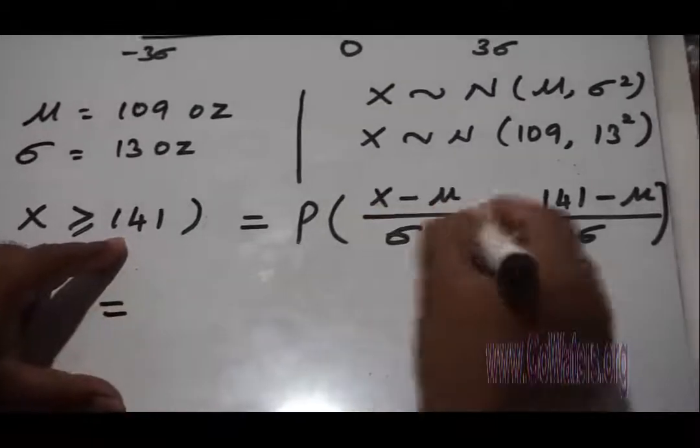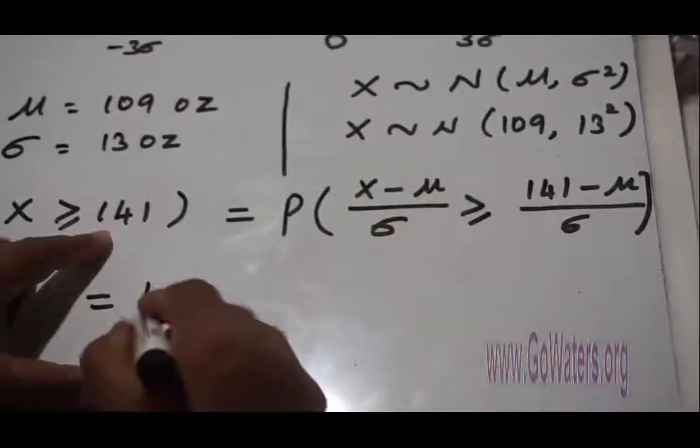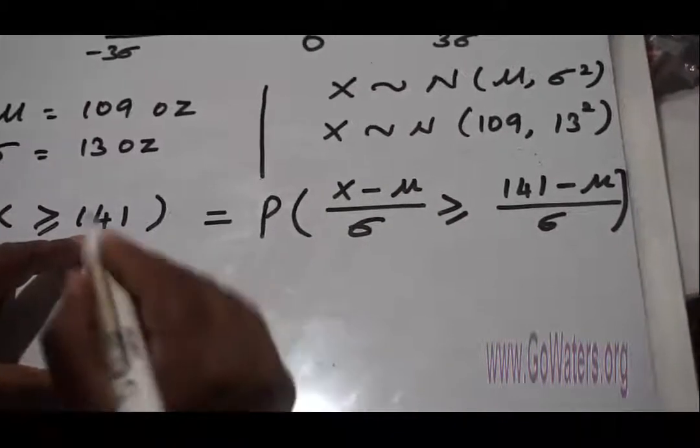As I said earlier, X minus μ over σ is my Z. This is Z.